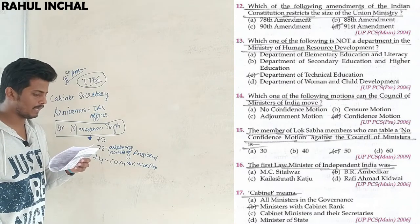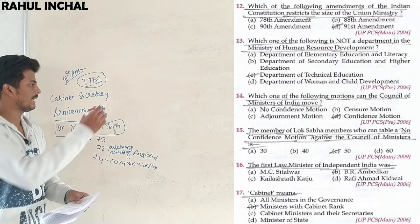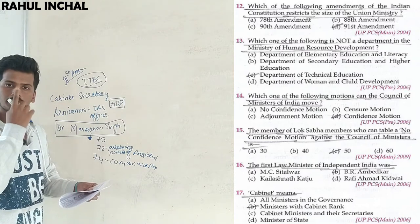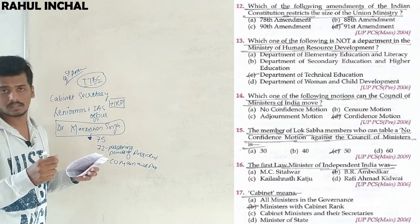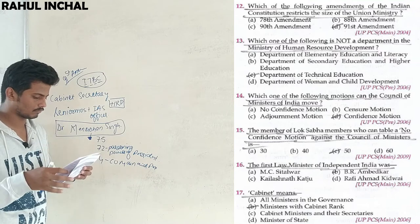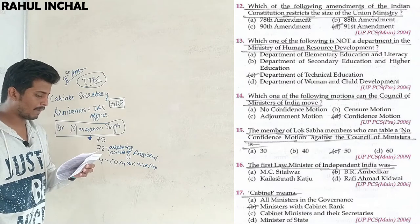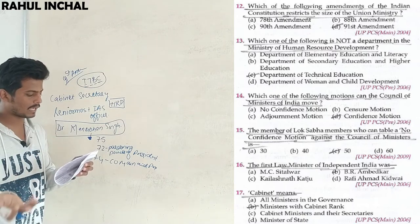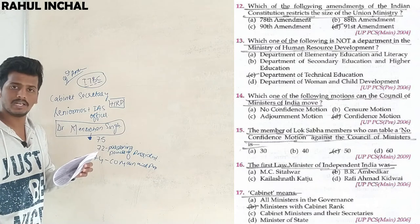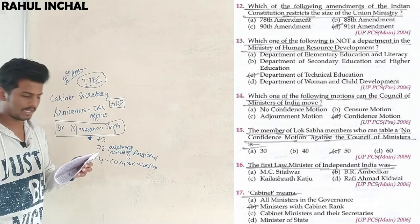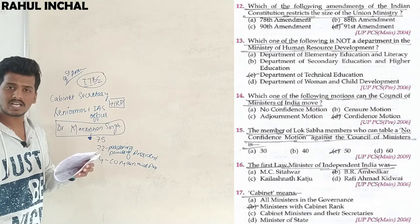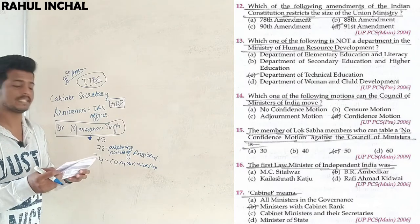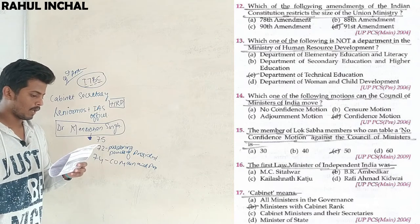Which of the following is not a department in the Ministry of Human Resource Development (HRD)? The answer is the Department of Technical Education — it does not come under HRD. What does come under HRD: Department of Elementary Education and Literacy, Department of Secondary and Higher Education, and Department of Women and Child Development. Technical Education is separate.